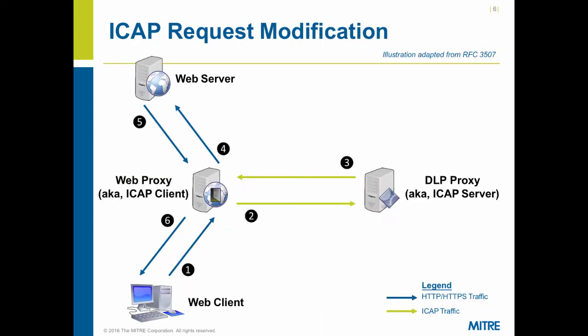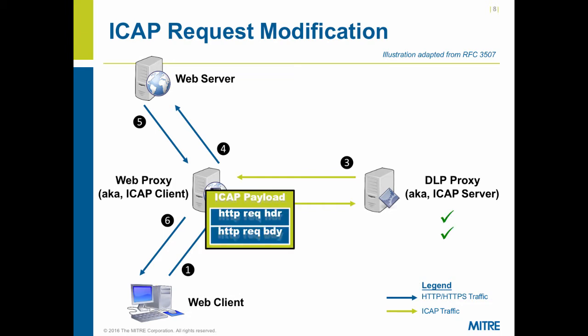In response modification mode, the RFC says the ICAP payload can contain up to three entities: the original client request header, the server response header, and the server response body if present. Again, the body must be chunk encoded. We have a simple network diagram: a web client at the bottom, a web proxy acting as the ICAP client, and for request modification mode the ICAP server would be like a data loss prevention device, with the web server out on the public internet. The whole thing starts with the web client issuing a request — the proxy intercepts it and, in request modification mode, takes the HTTP header and body, puts them in the payload, and sends it to the ICAP server for inspection.